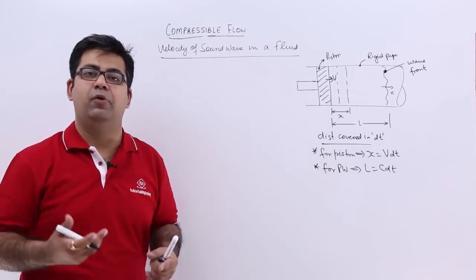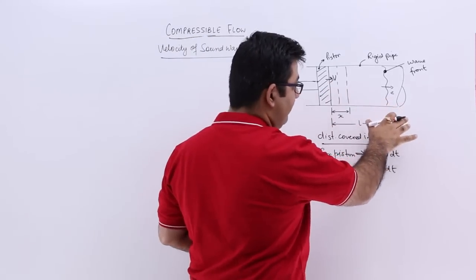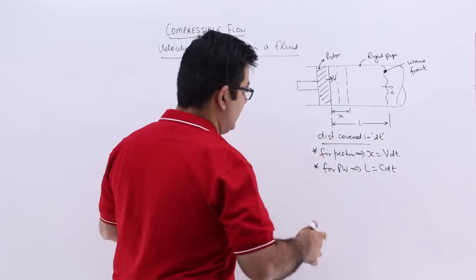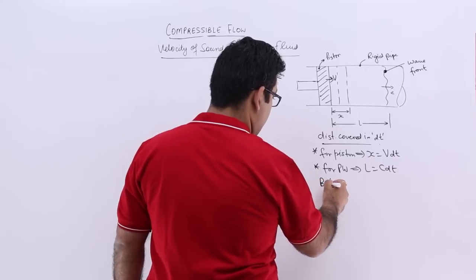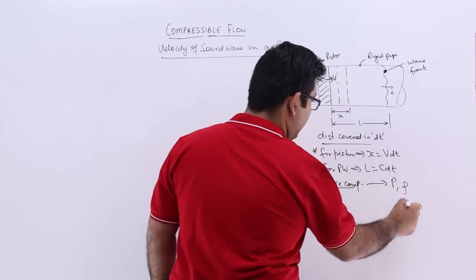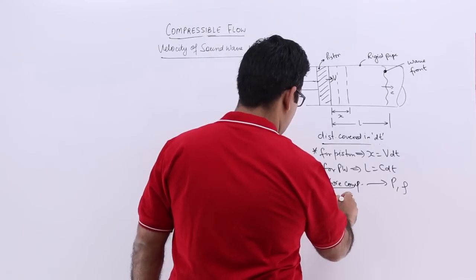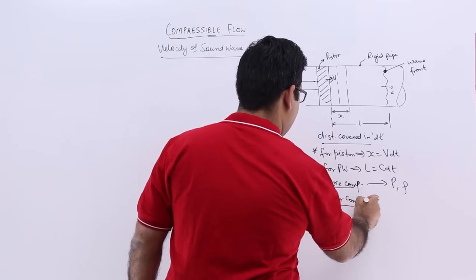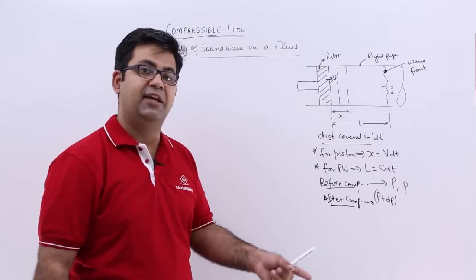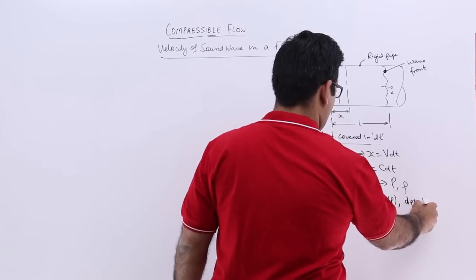Due to the compressible fluid, there will be a change in pressure because we are pressing it and there is the generation of a pressure wave, and there will be a change in density also. Before compression, the pressure is p and the density is rho. After compression, the pressure has become p plus dp and the density will now become rho plus d rho.